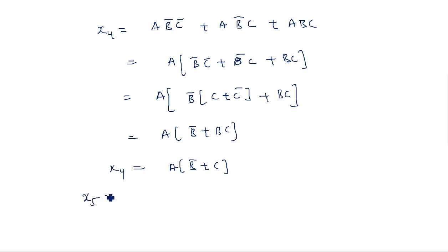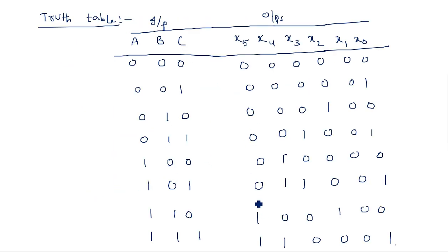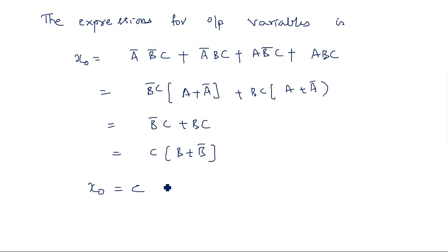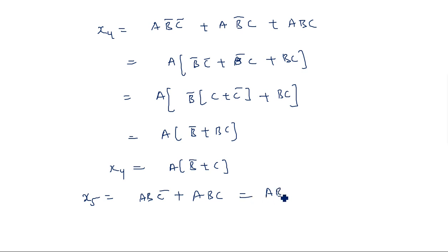X5 is 1 only at the last two entries — input values 6 and 7, corresponding to A·B·C̄ and A·B·C. Taking A·B common gives A·B·(C + C̄) = A·B·1 = A·B. So X5 = A·B.